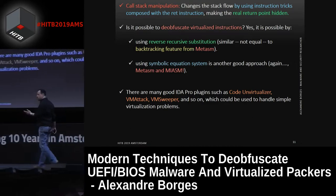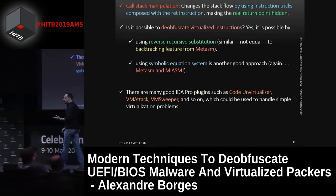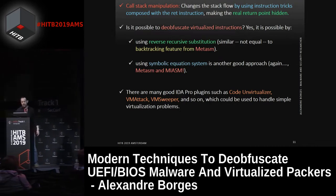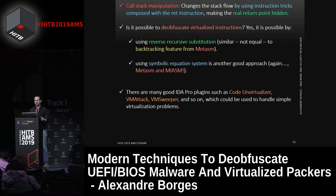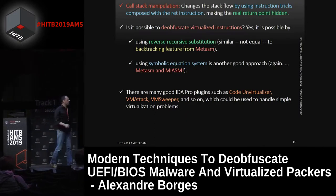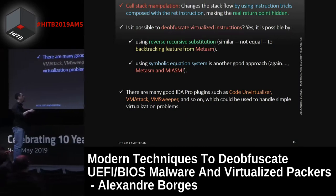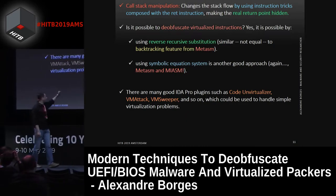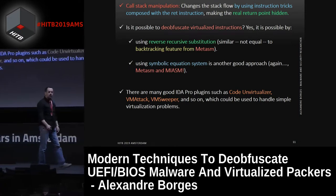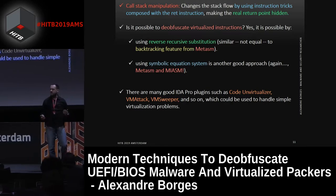Is it possible to handle this kind of tricks and obfuscation? Yes, it's possible. For example, we have reverse recursive substitution using Metasm, and we have symbolic equation systems also using Metasm and Miasm. We have very good plugins using, for example, code unvirtualizer. We have VM Attack, VM Sweep, and every single plugin tries to help us reverse this kind of code.